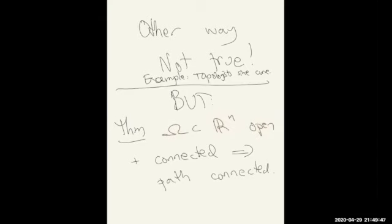The canonical example showing connected does not imply path connected is the topologist's sine curve: the graph of sin(1/x) together with the segment {0} × [−1,1], which are the limit points as x → 0. This space is connected but not path connected. However, if you add the assumption that the set is open, then connected does imply path connected — openness is crucial and without it the implication fails.